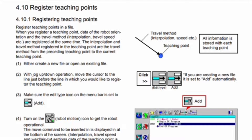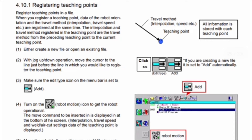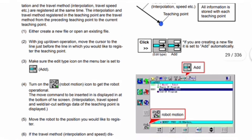First, either create a new file or open an existing file. Second, with jog up/down operation, move the cursor to the line just before the line where you would like to register the teaching point. Make sure the edit type icon on the menu bar is set to Add. Fourth, turn on the robot motion icon to get the robot operational. The move command to be inserted is displayed at the bottom of the screen.